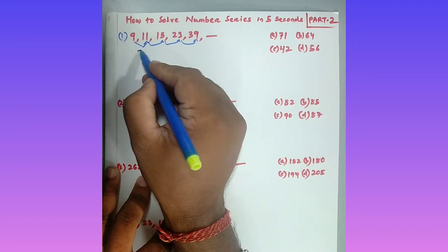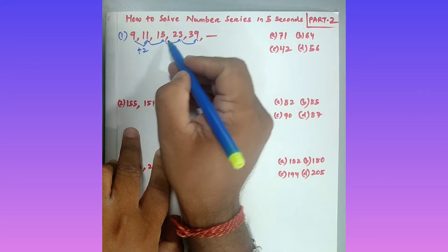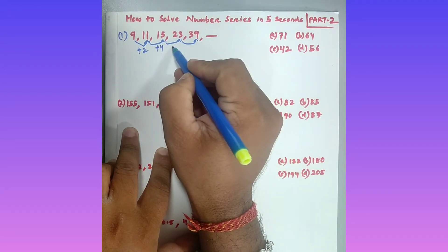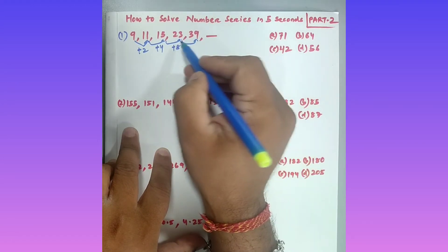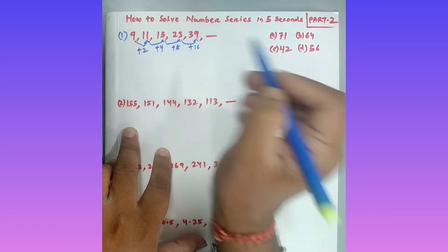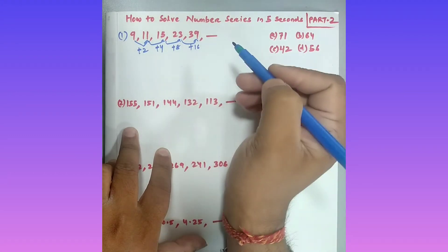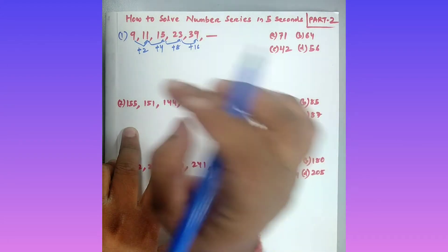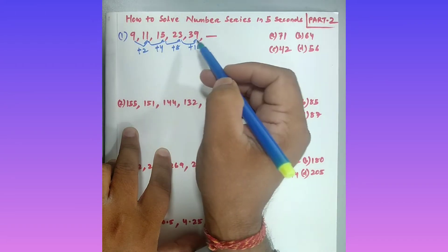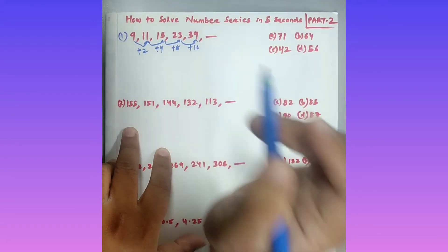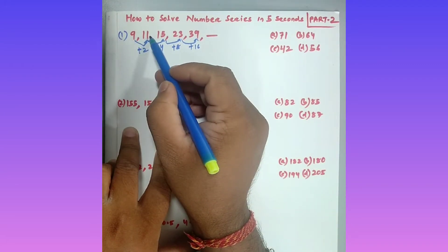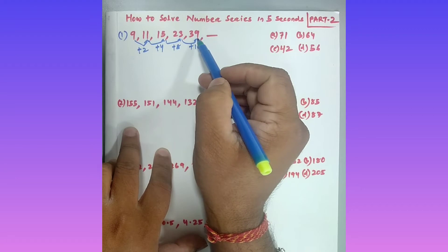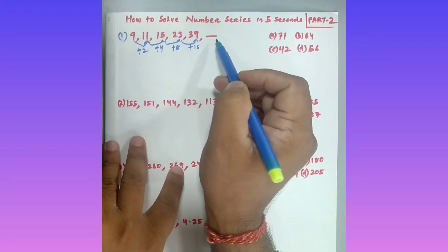Comparing 9 and 11: 9 plus 2 equals 11. Then 11 plus 4 equals 15. Then 15 plus 8 equals 23. Then 23 plus 16 equals 39. So I am applying addition logic here. When there is a small gap between two numbers in increasing order, you apply addition logic.